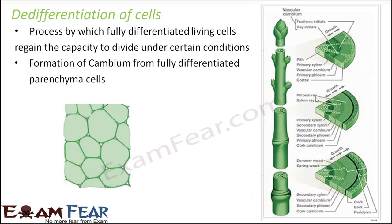If you remember the structure of the cambium, here on screen you can see the cork cambium and the vascular cambium. The vascular cambium is formed between xylem and phloem. And the dark color band is your cork cambium. These two layers of cells are formed later and they are formed from fully differentiated parenchyma cells. Formation of these two layers results in the secondary growth of plants, which in turn increases the thickness of the plants. So this process is de-differentiation.